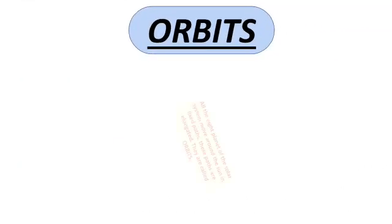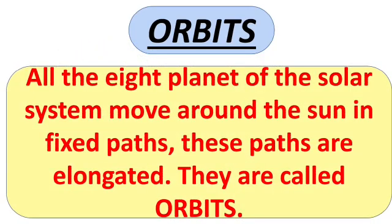Orbits — all eight planets of the solar system move around the sun in fixed paths. These paths are elongated and are called orbits.